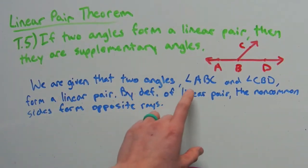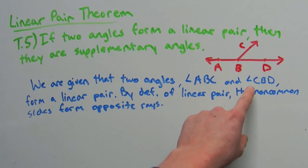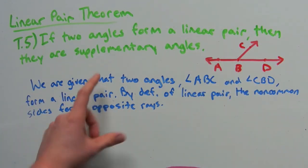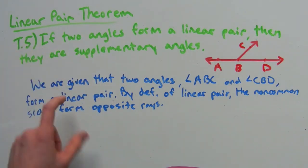We are given that two angles, angle ABC and angle CBD, form a linear pair. That's what's given to us in the hypothesis of this if statement for the linear pair theorem.